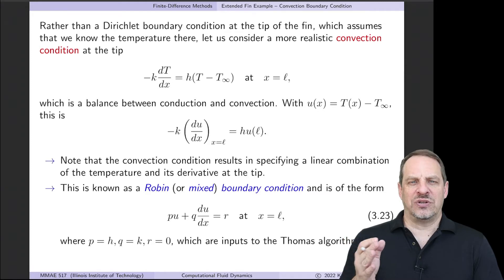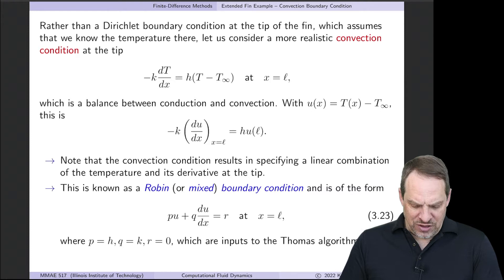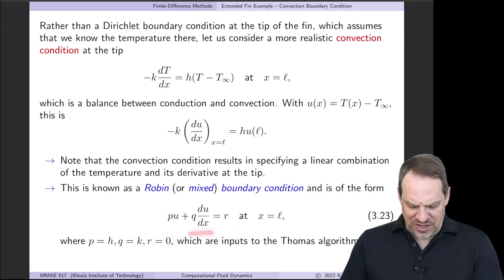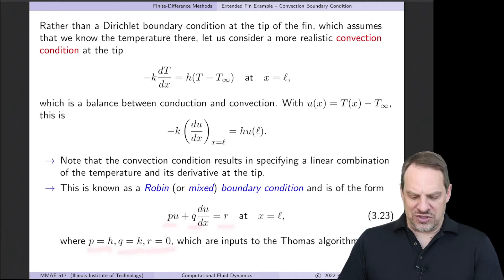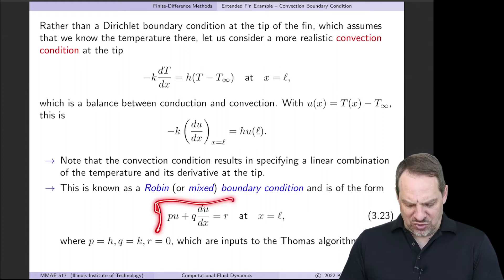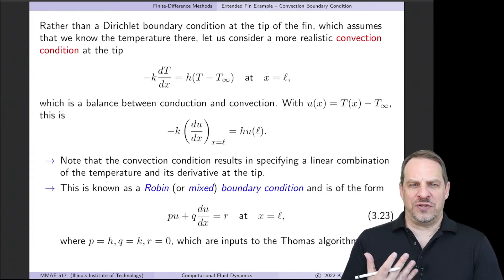Whereas before we had U at L specified as a number — the temperature of the tip — now we have a linear combination of U and its derivative, the heat flux out of the tip. This is called a mixed or Robin boundary condition. A fixed boundary condition is Dirichlet, a derivative boundary condition is Neumann, and one with both U and du/dx is Robin. In general form: P times U plus Q times du/dx equals R at the boundary. Here P is h, Q is K, and R is zero for the convection condition.